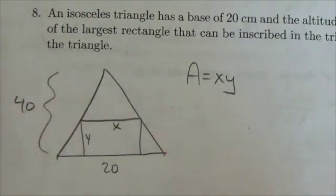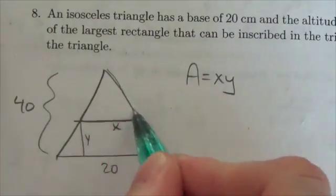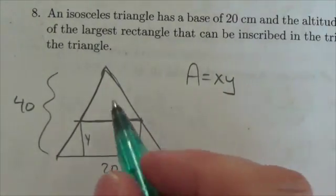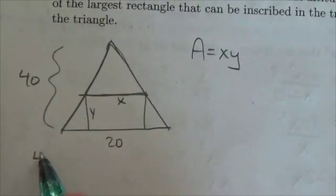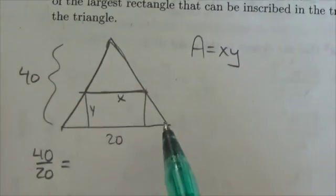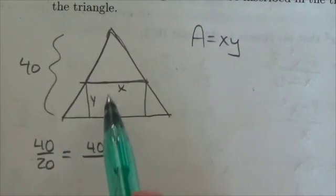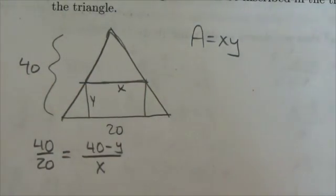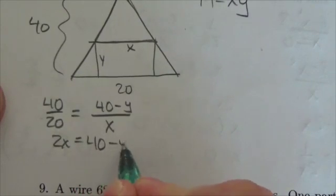But the nice thing is there is some nice geometry in this diagram. Notice that this triangle right here, because this shape is inscribed in this nice isosceles triangle where the two sides are the same, that triangle is going to be similar to the larger triangle. So for the large triangle, the altitude over the base—that ratio for this small triangle is also going to be true. The altitude for this small triangle is going to be 40 minus y, and the base is just x. Well we know that 40 over 20 is just 2, so 2x is equal to 40 minus y.